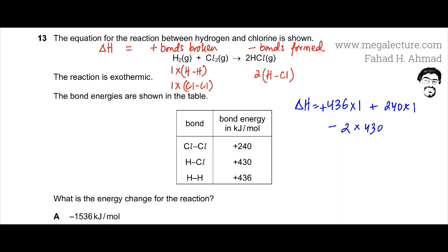Then you have bonds formed. Two H-Cl bonds are formed. That's 430, but negative because bond formation is exothermic. So 430 times 2. Now calculating this value equals...